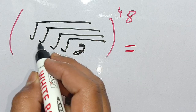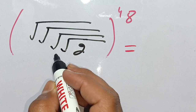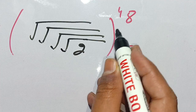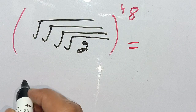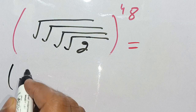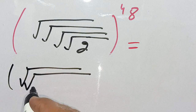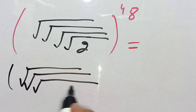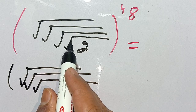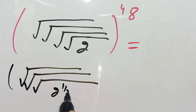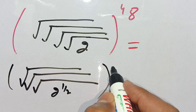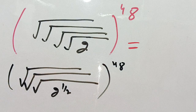How to solve square root of square root of square root of square root of 2 to the power 48. Let us solve this. We can write this as square root of square root of square root, and we evaluate this square root — it means 2 to the power 1 divided by 2, because the square root value is 1 divided by 2, and bracket power 48 as it is.